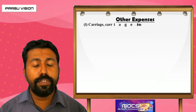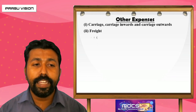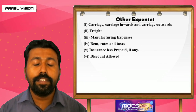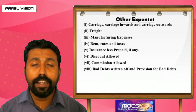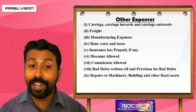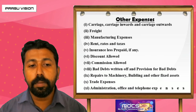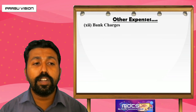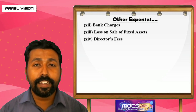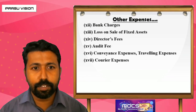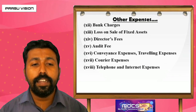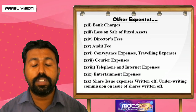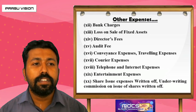Other expenses include many items: carriage inward, carriage outward, freight, manufacturing expenses, rent, rates and taxes, insurance less prepaid, discount allowed, commission allowed, bad debts written off and provision for bad debts, repair of machinery, building and other fixed assets, and trade expenses. Administration, office, and telephone expenses also fall here. Additionally, other expenses include bank charges, loss on sale of fixed assets, director's fee, audit fee, conveyance and travelling expenses, courier expenses, entertainment expenses, share issue expenses written off, and underwriting commission on issue of shares written off.